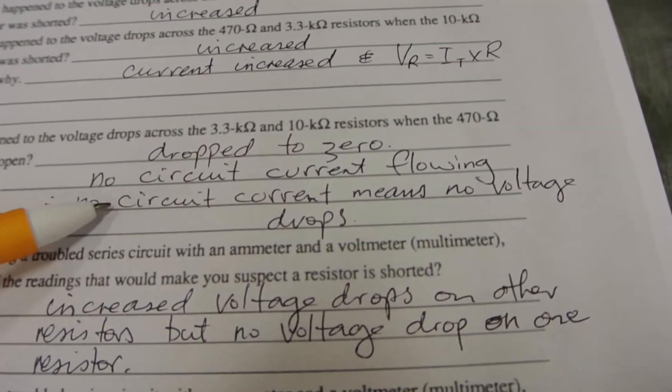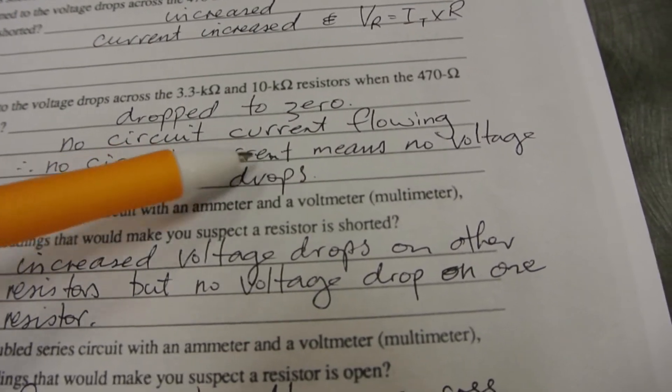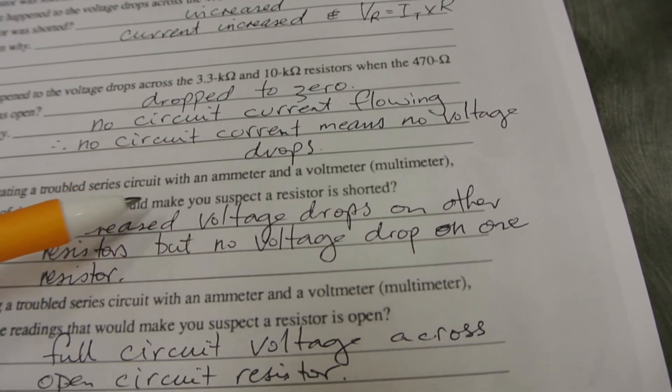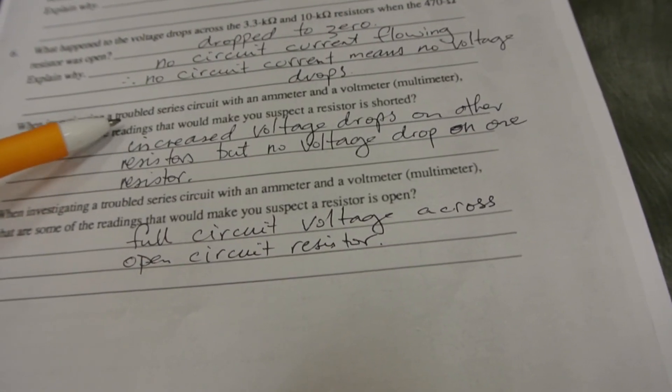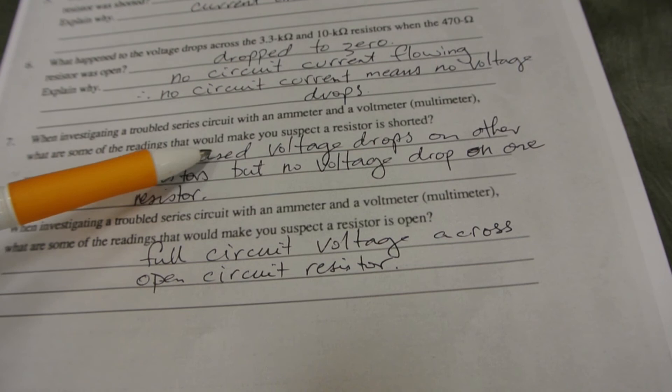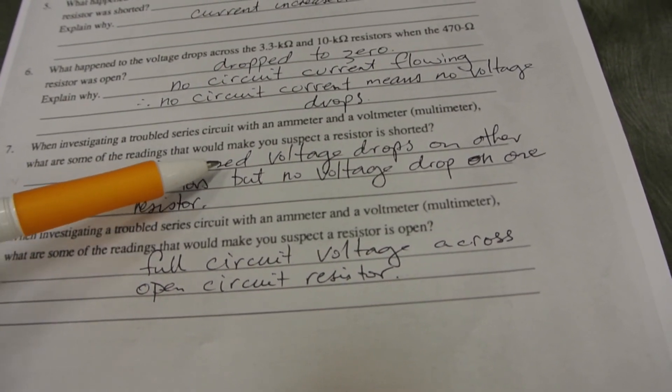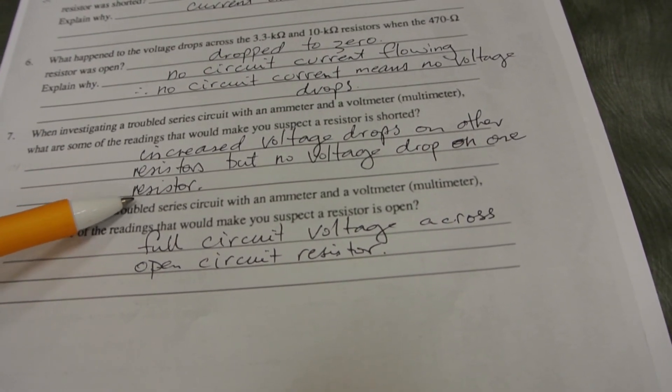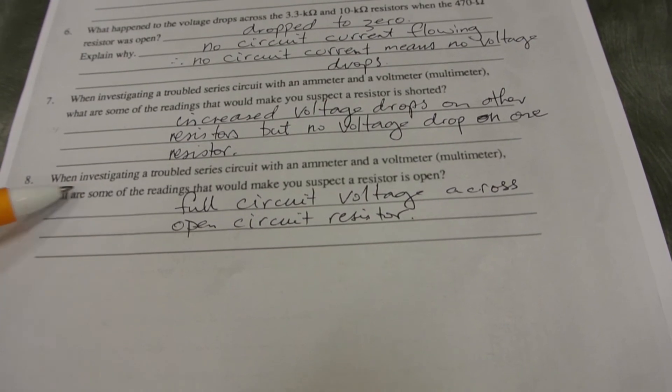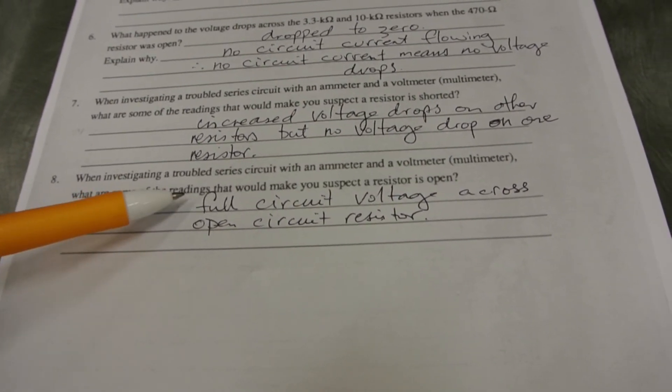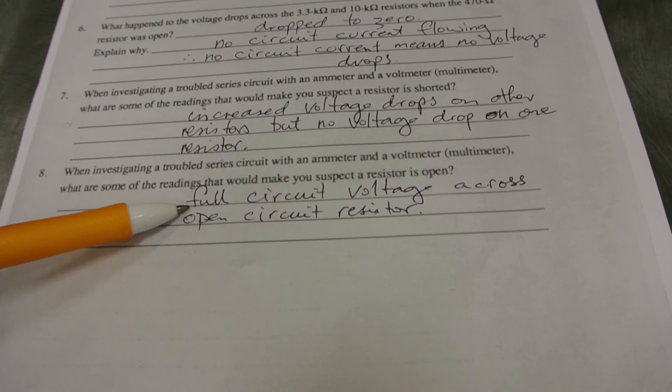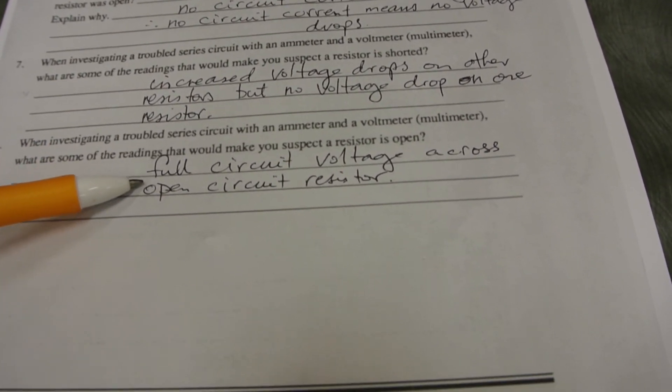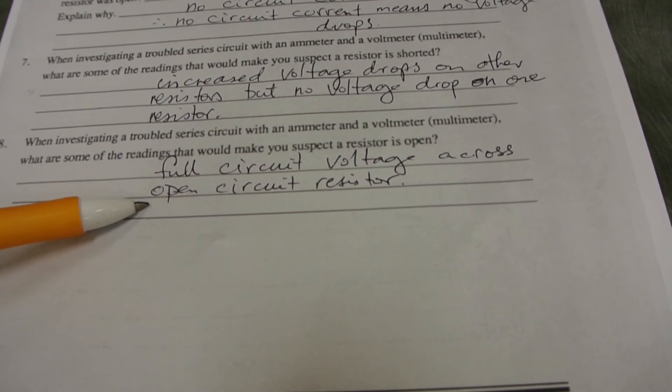Explain why: no circuit current flowing. Therefore, no circuit current means no voltage drops. Question 7: When investigating a troubled series circuit with an ammeter and voltmeter, what readings would make you suspect a resistor is shorted? Increased voltage drops on other resistors, but no voltage drop on one resistor. And lastly, question 8: When investigating a troubled series circuit, what readings would make you suspect a resistor is open? Full circuit voltage across an open circuit resistor.